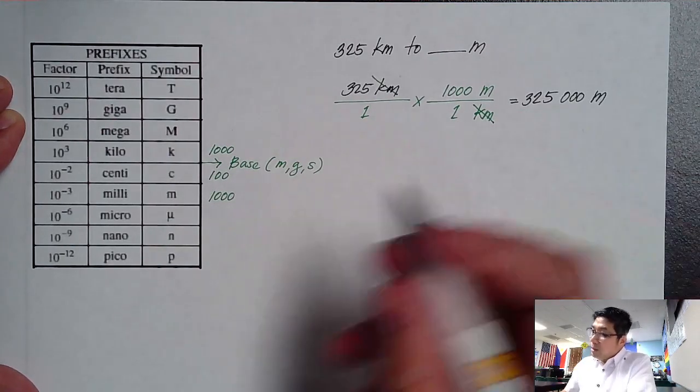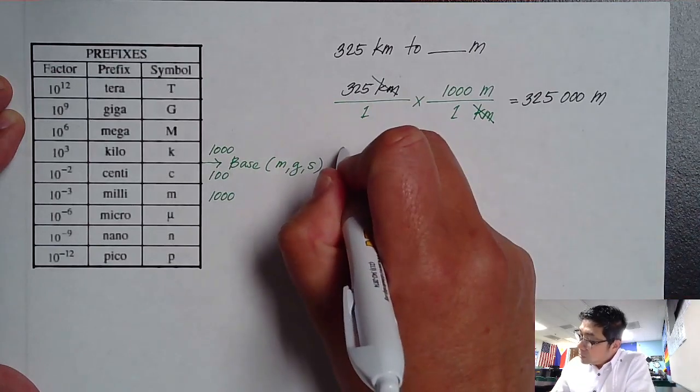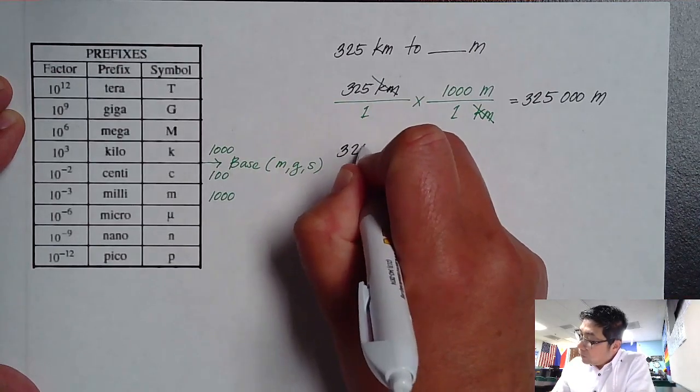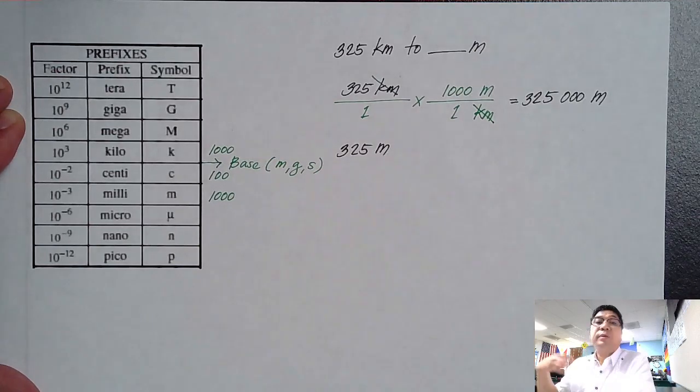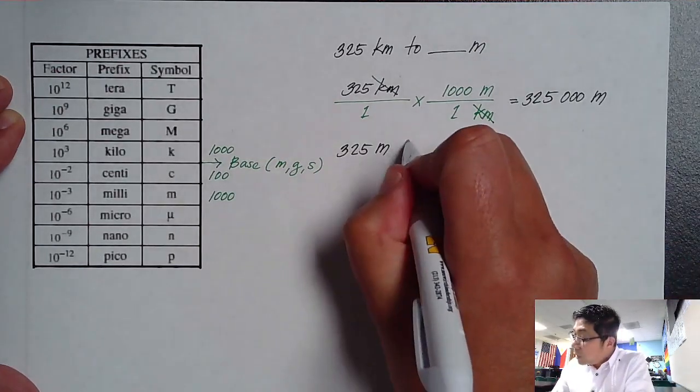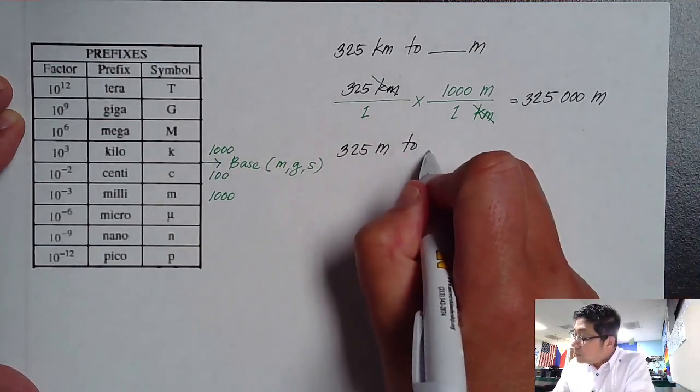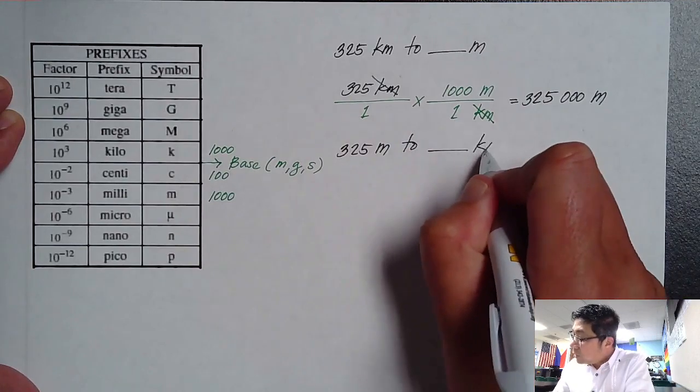Now, as I was mentioning earlier, what if we use the same number, 325 meters instead of kilometers? Now this time it's meters towards kilometers. So let's convert this into kilometers.